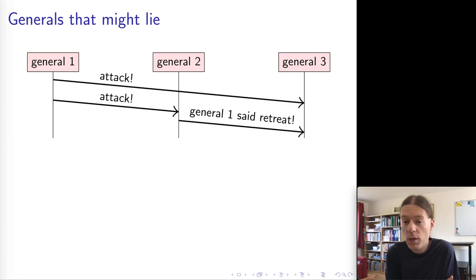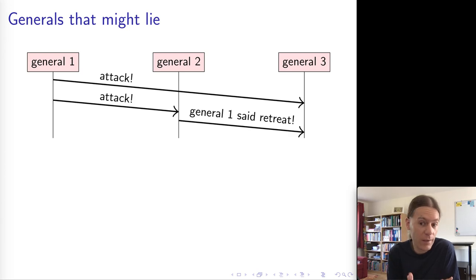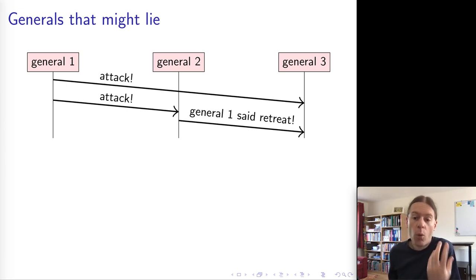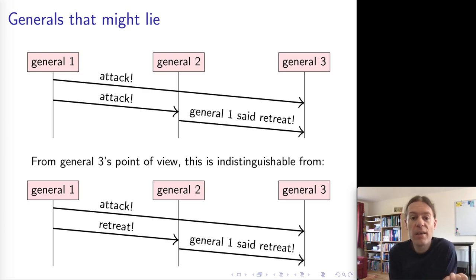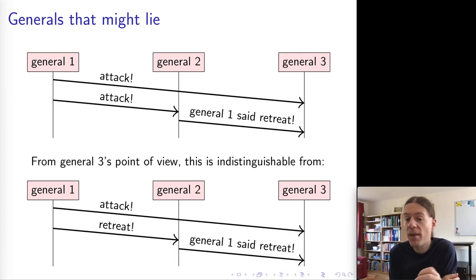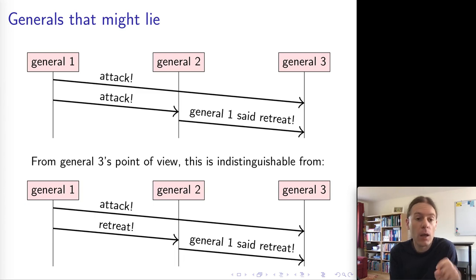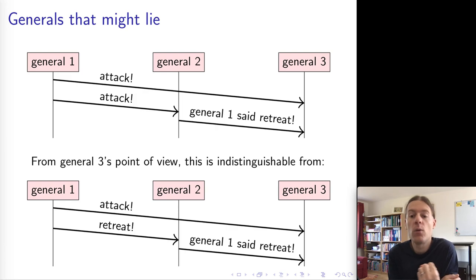What general two is doing here is lying — claiming that general one sent a retreat message when in fact general one sent an attack message. So general two is the malicious one. However, from general three's perspective, it's not easy to tell what is actually happening. It could equally well be that general one sent an attack message to three and a retreat message to two, and general two is faithfully repeating what it received. In that alternative scenario, it's general one who is being malicious by sending contradictory commands to generals two and three.